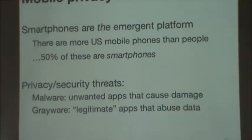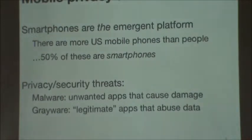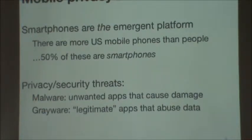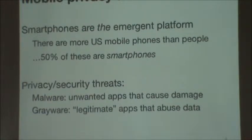So if you have an Android phone and something is identified, it's identified relatively quickly, and the provider or Google can remotely pull the offending code off your device. So the spread is much more limited than what we have in the desktop environment. That brings up the second big problem with security and privacy, which is much more prevalent, and that's grayware.